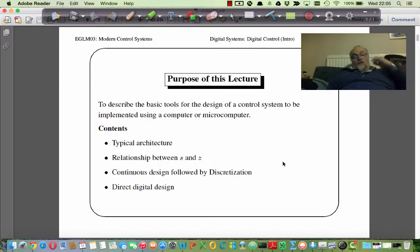So what I want to do in this lecture, in this presentation, is just basically set the scene to talk about how a digital control system typically is set up, what kind of architecture it is, what kind of components you would use, and then talk a little bit about the relationship between S and Z and the implications that that has, particularly on stability and the sort of design space that we use to develop control systems.